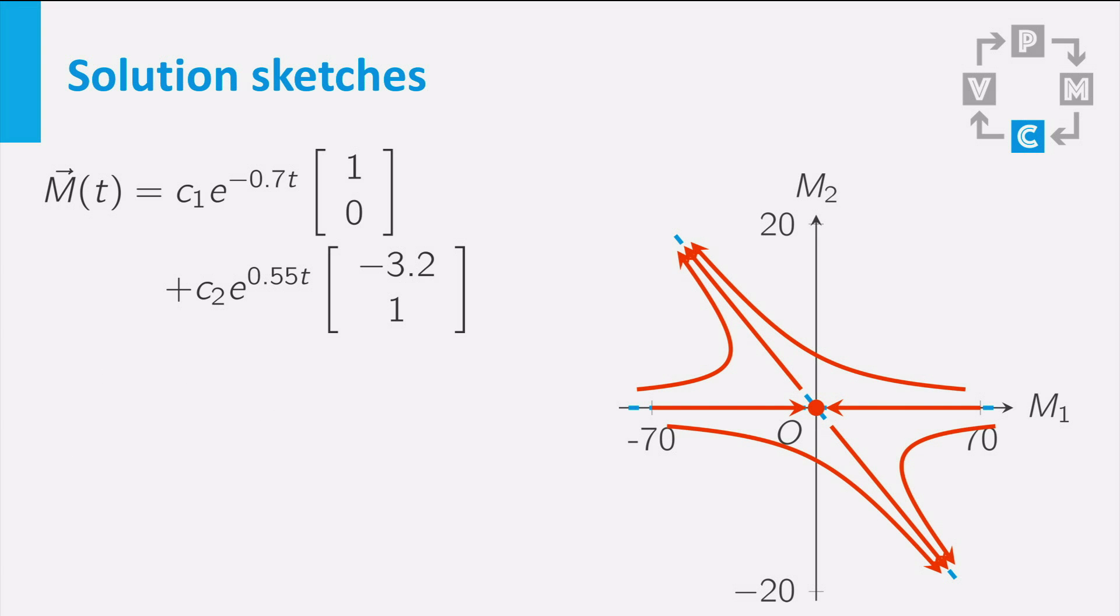Taking a few other combinations of c1 and c2 leads to sketches like this. Adding even some more gives you this nice picture in the phase plane for m.